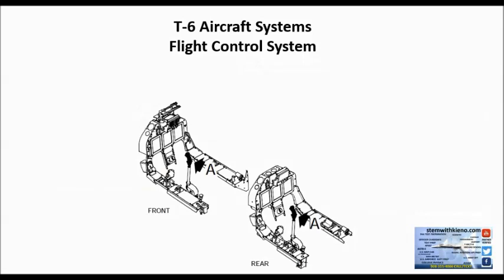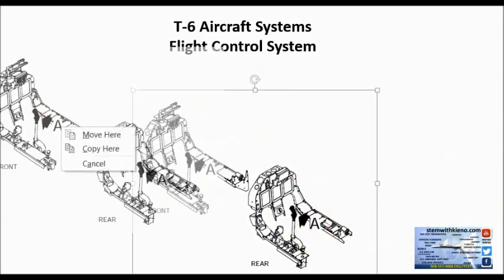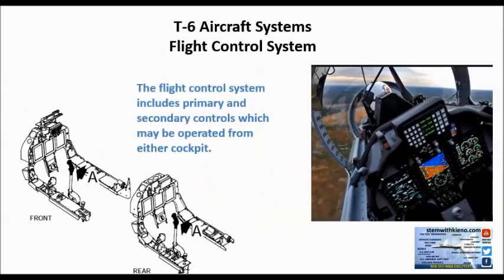The T-6 aircraft flight control system can be manipulated from the front or the rear cockpit. The front cockpit is typically the student naval aviator's position, and the rear cockpit is typically the instructor pilot's position. The flight control system includes primary and secondary controls, which may be operated from either cockpit.